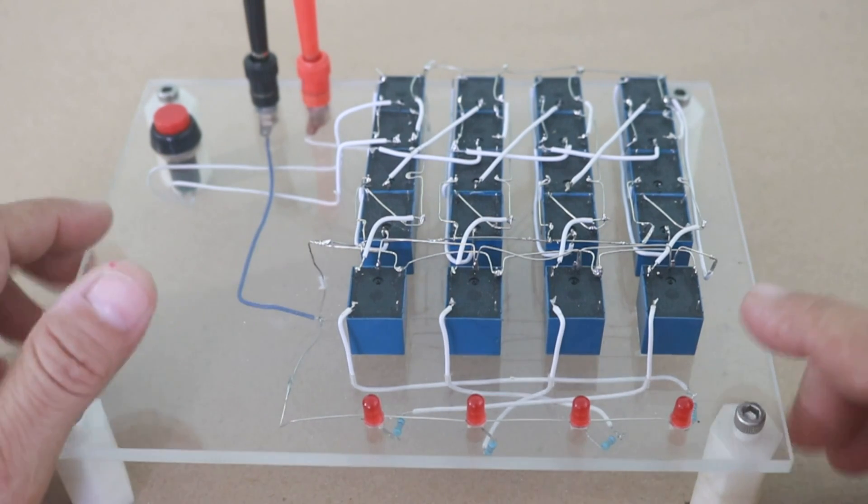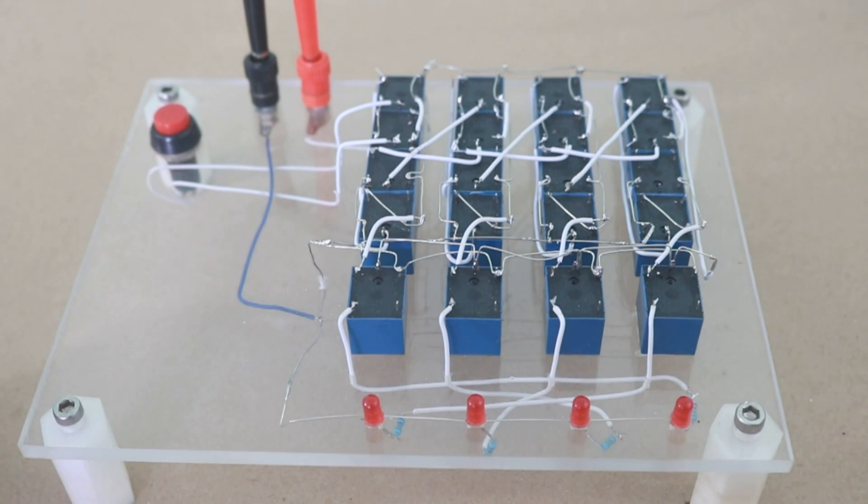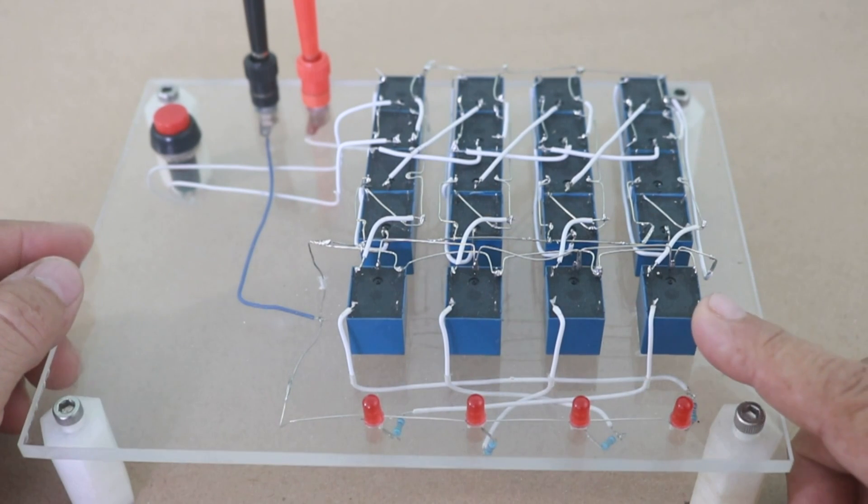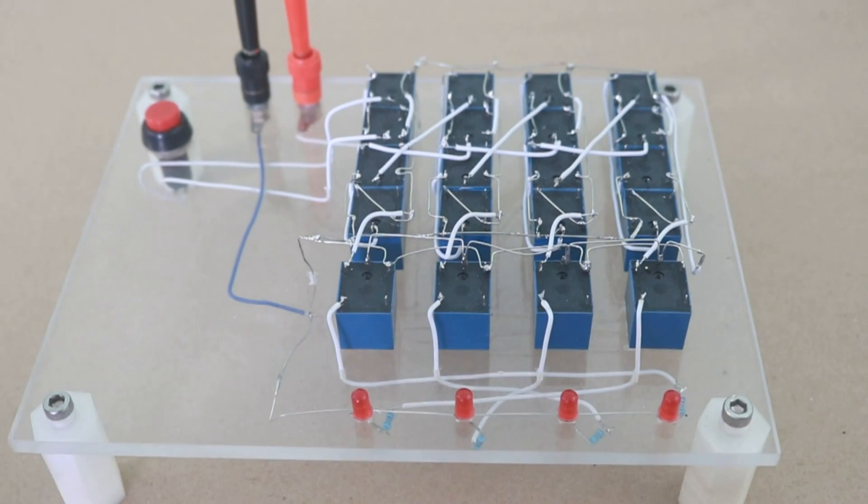before transistors and even before valves or vacuum tubes. These were the only switching elements of the time, that is electromechanical relays. And you can build several types of logical devices, as in this case where we have a binary counter.